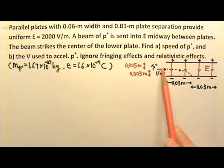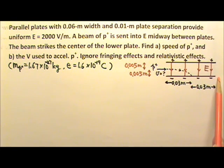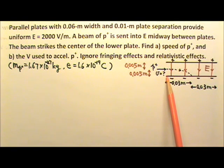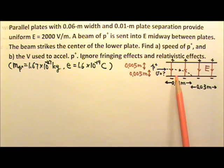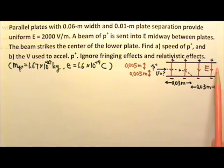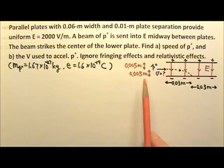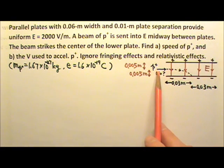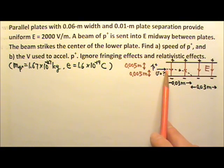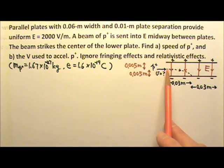In a vacuum chamber, a set of charged parallel plates with 0.06 meter width and 0.01 meter plate separation are used to provide a uniform downward electric field of 2000 volts per meter. A beam of protons is sent into this uniform electric field horizontally midway between the two plates.